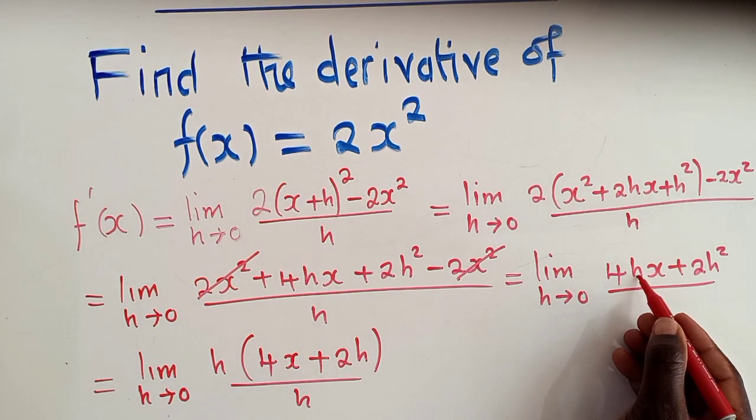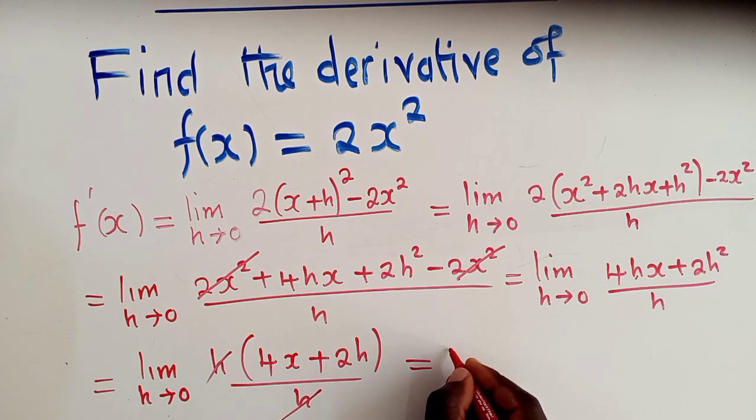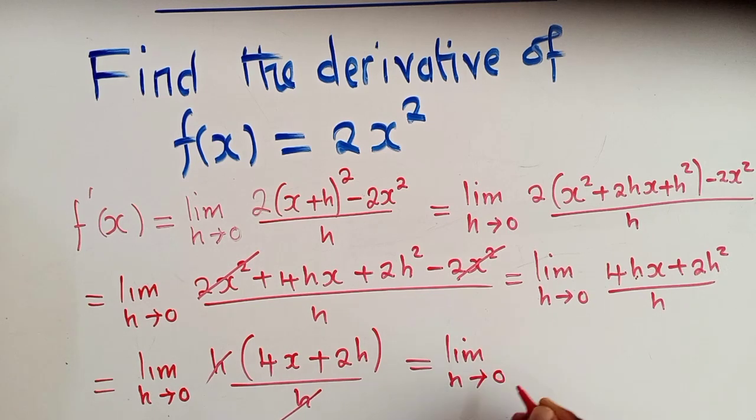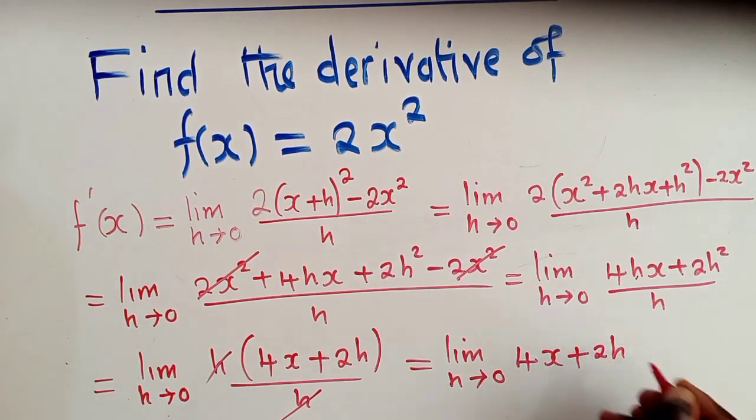So we just factor out h. h is right here and it's also here. So the h down here will cancel with the h on top. And we'll remain with a limit as h approaches 0 of 4x plus 2h.